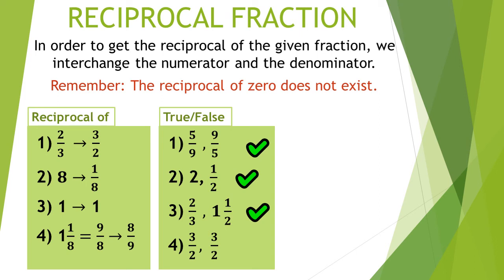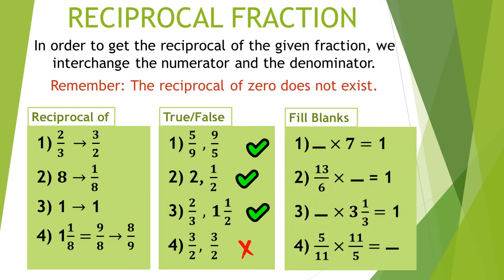Question 4: 3 upon 2 and 3 upon 2 — the answer is no. Fill in the blanks: Question 1: dash multiplied by 7 is equal to 1. The reciprocal of 7 is 1 upon 7, so the answer is 1 upon 7. Question 2: 13 upon 6 multiplied by dash is equal to 1 — the answer is 6 upon 13. Question 3: dash multiplied by 3 1 upon 3 is equal to 1. Since 3 1 upon 3 is a mixed number, convert to improper fraction: 3 3s are 9 and 9 plus 1 is 10, so the fraction is 10 upon 3. The reciprocal of 10 upon 3 is 3 upon 10, so the answer is 3 upon 10. Question 4: 5 upon 11 multiplied by 11 upon 5 is equal to 1. Hope you understood reciprocal fractions.